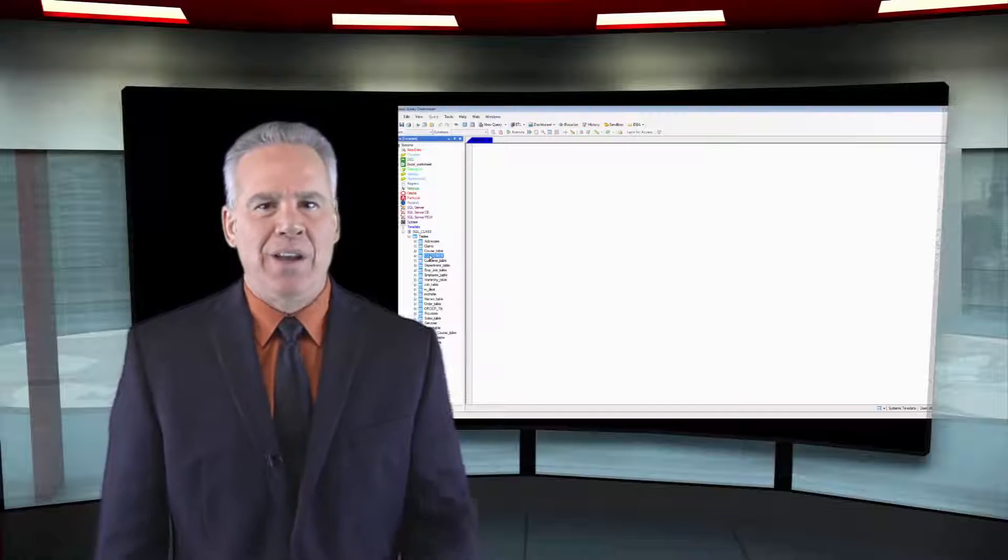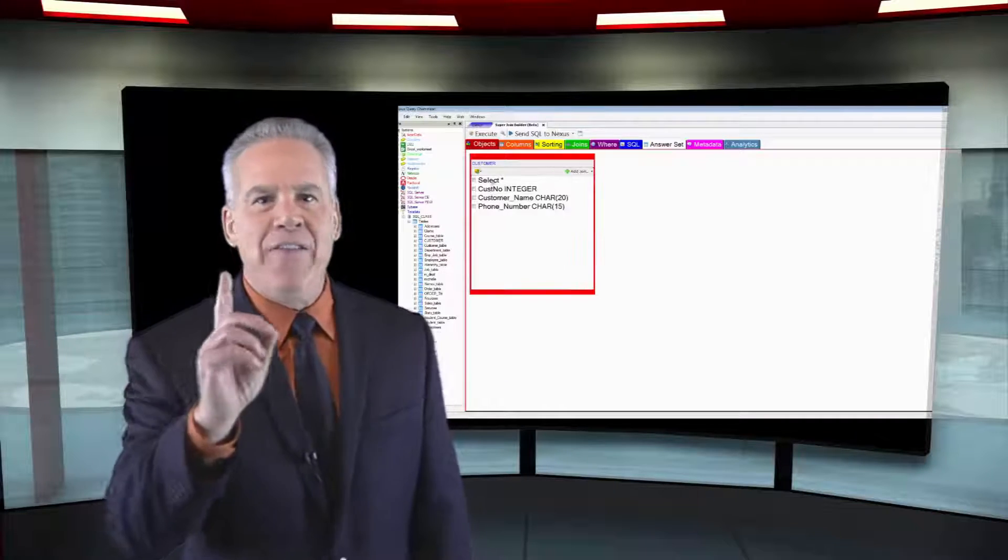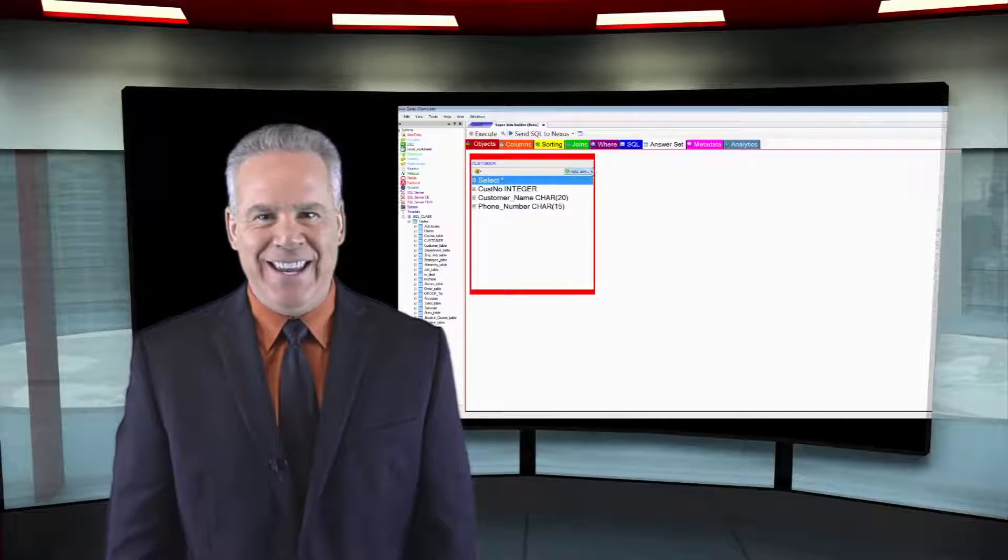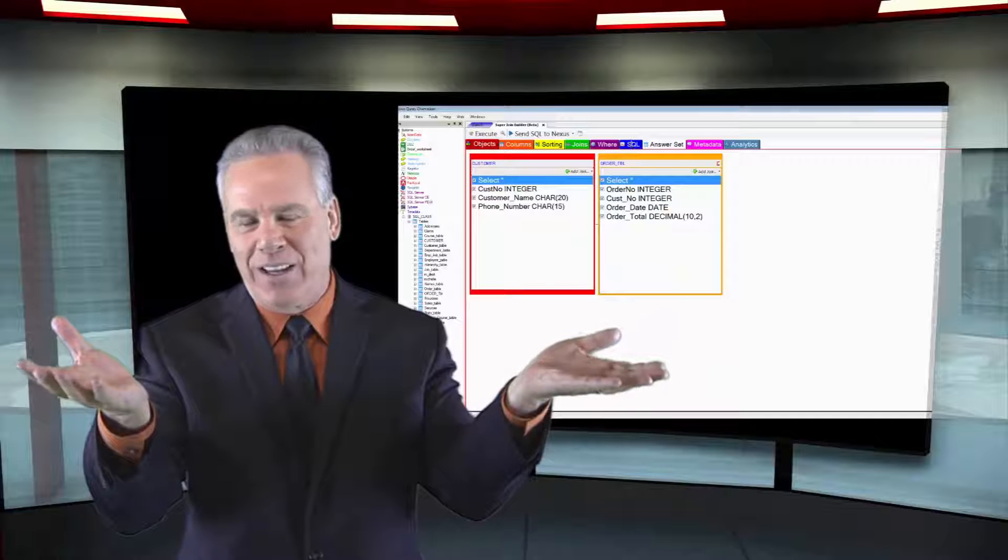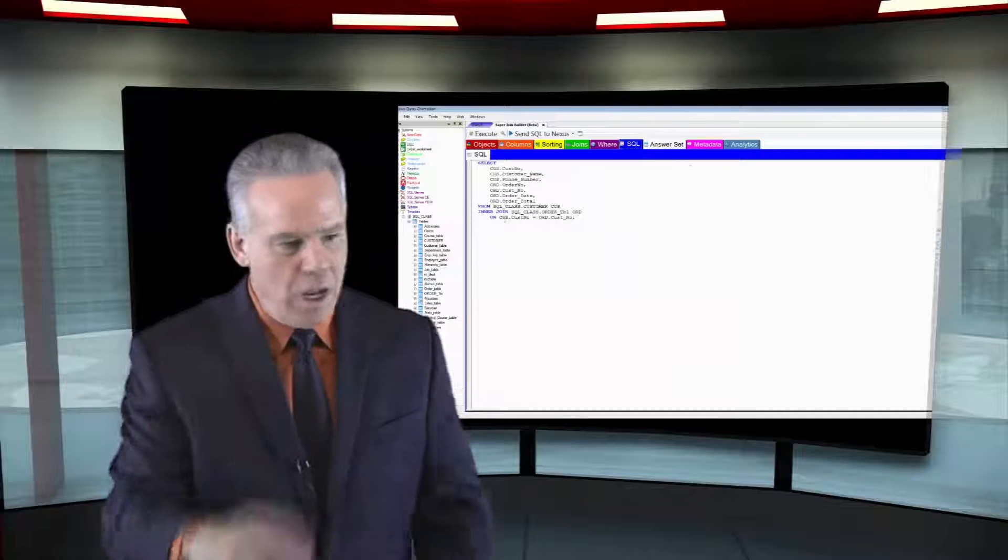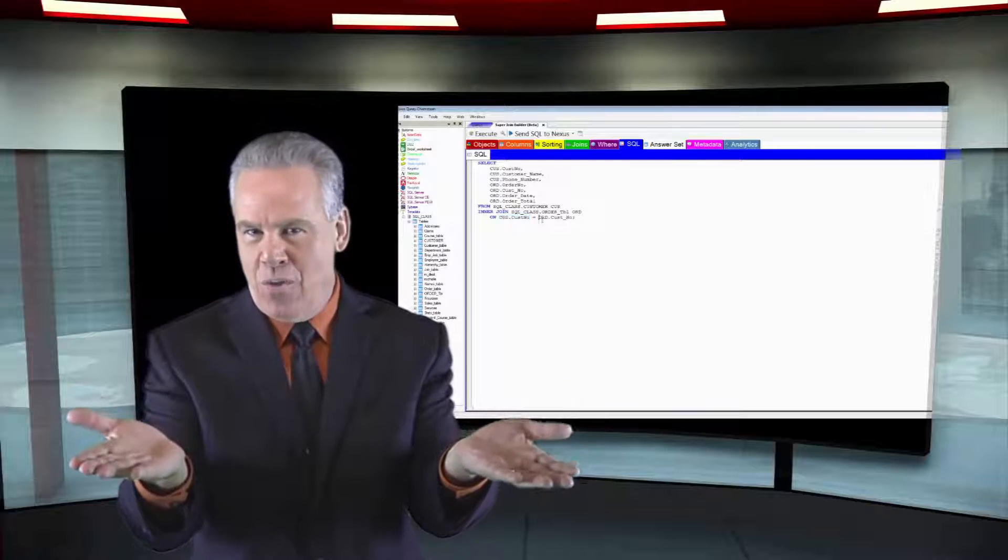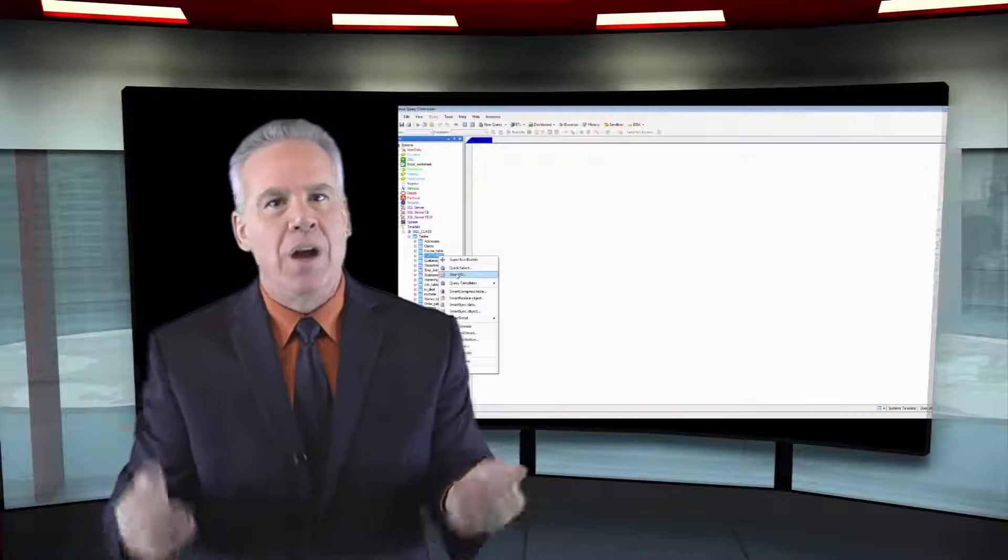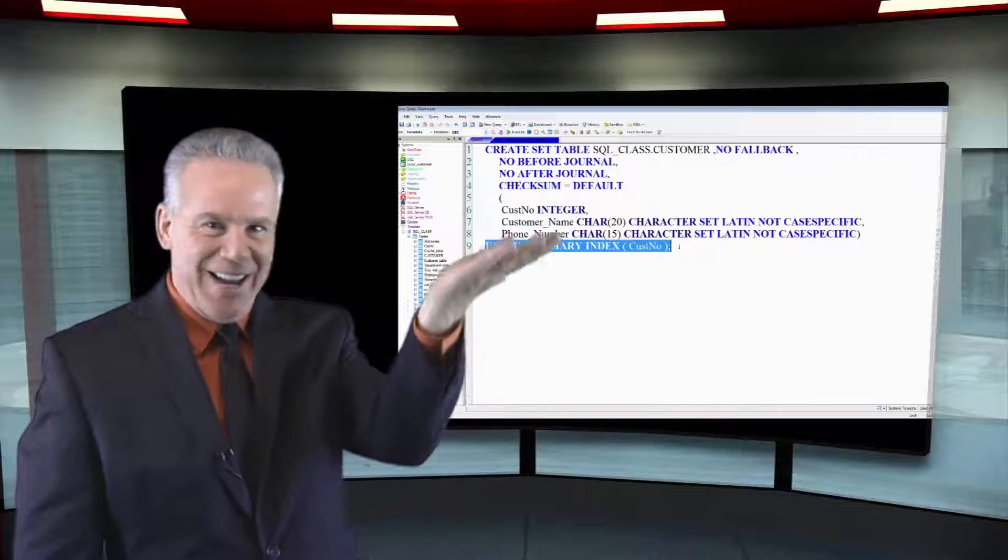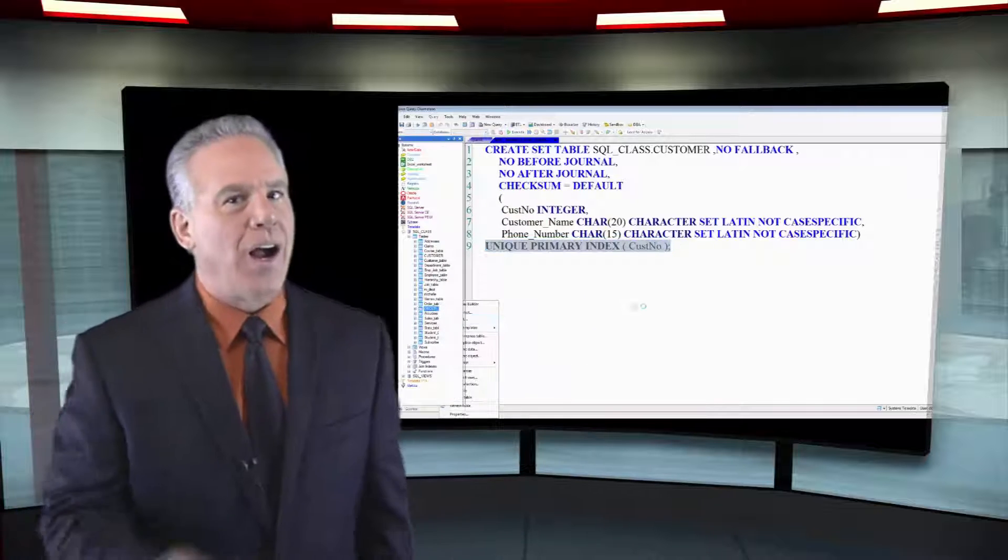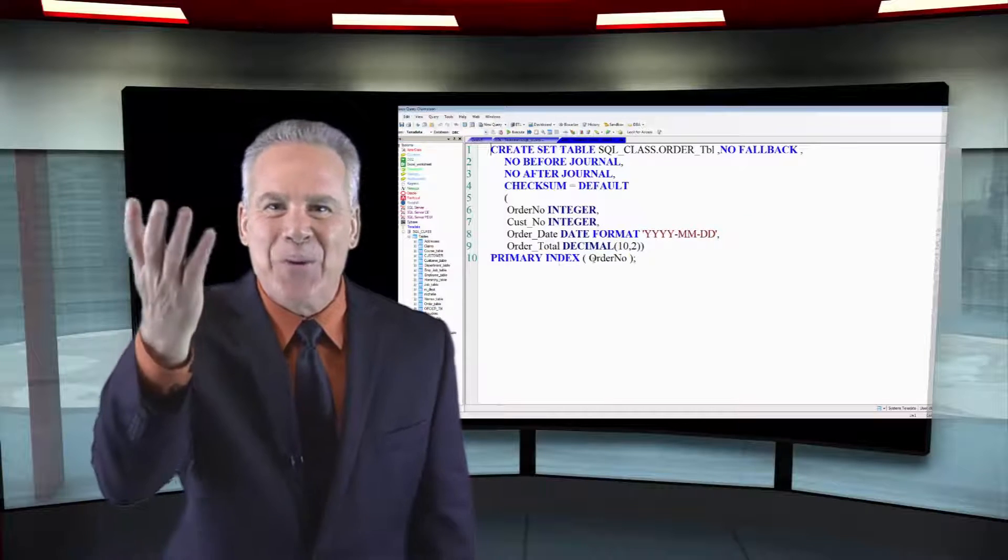I'm about to join a customer table to an order table and they've got one common key, customer number. Custno is what we're calling it. We're joining where Custno equals Custno. But here's the issue. On the customer table, the primary index is Custno. On the order table, the primary index is Orderno.